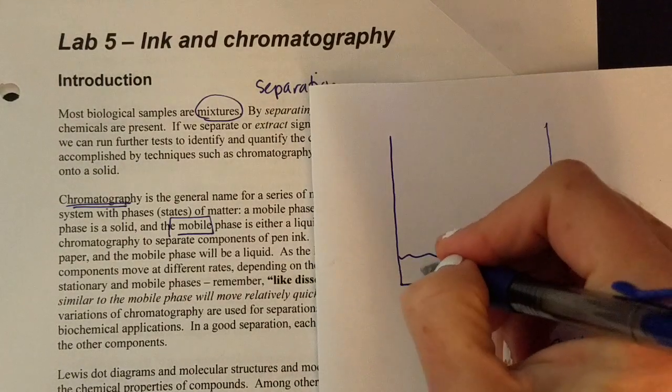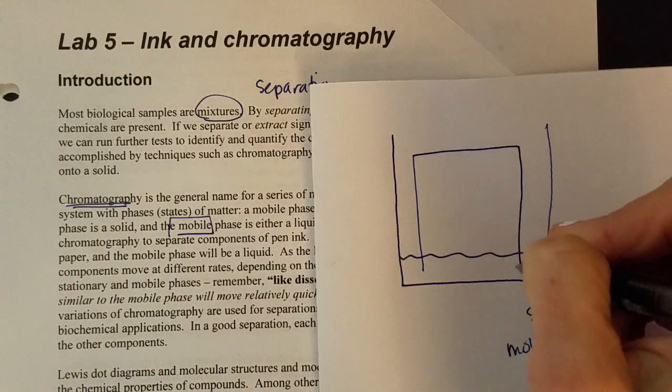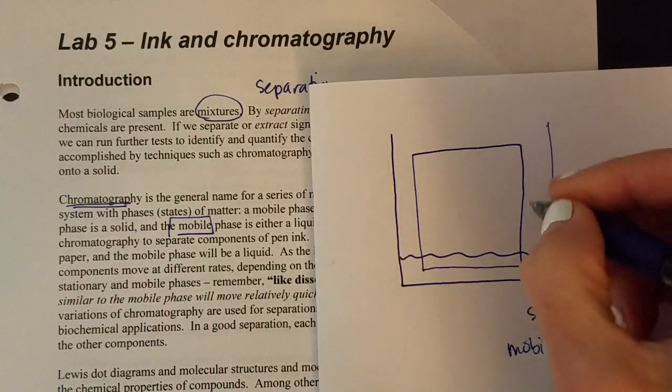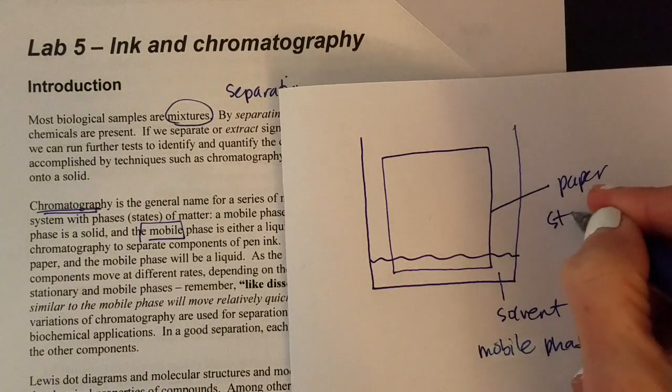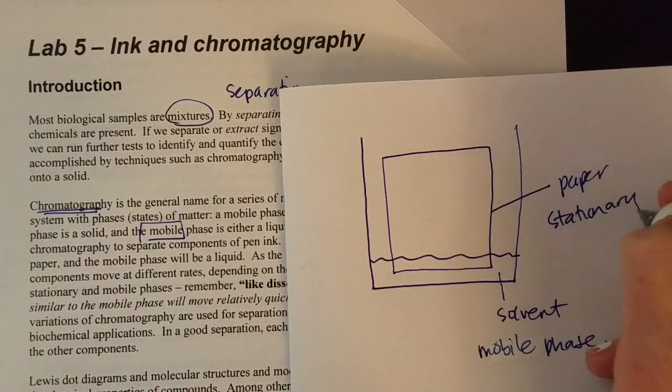So mobile phase will be here and then we'll put into that a piece of paper and that paper is going to be what we call the stationary phase. Stationary as in it doesn't move.